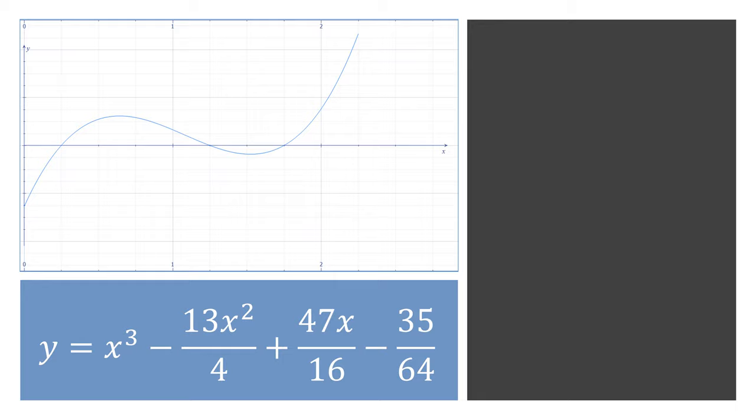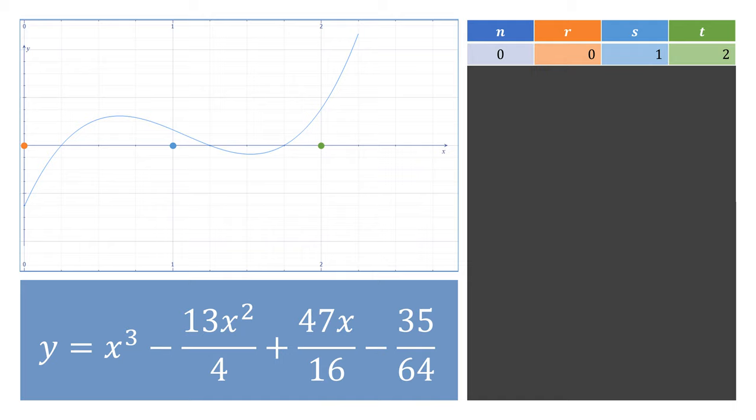Let's use Durand-Kerner to solve this polynomial and pick three starting values for r, s, and t, such as 0, 1, and 2. Then do one iteration of Durand-Kerner.